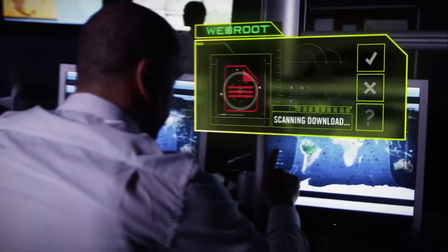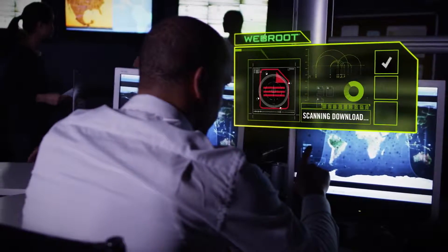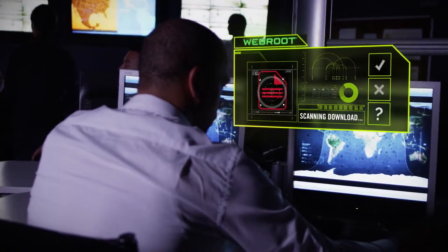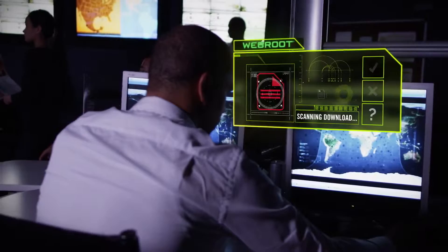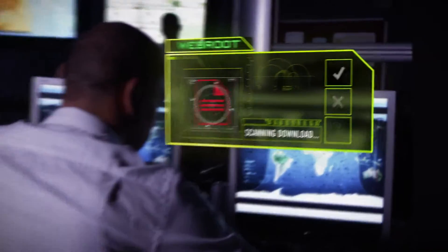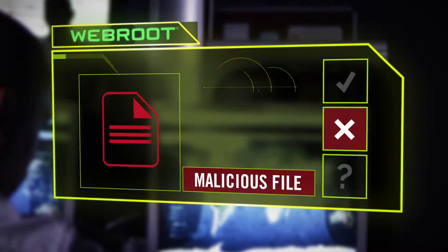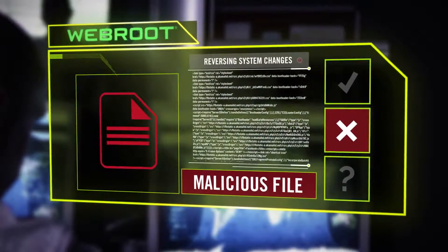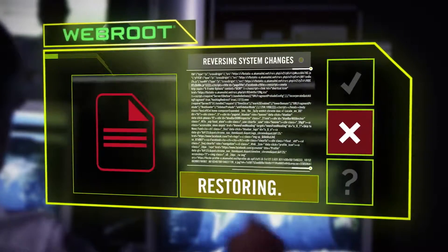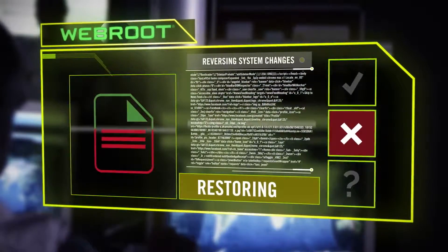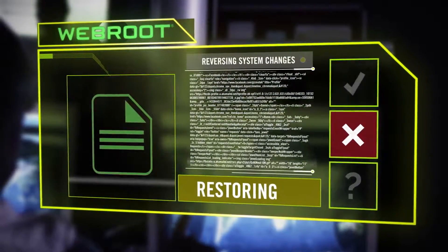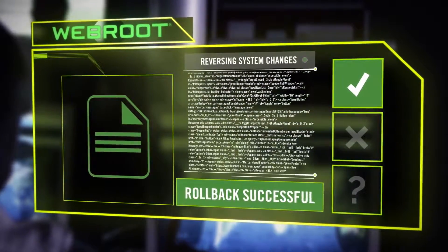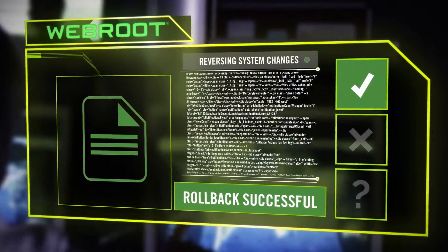SecureAnywhere doesn't stop monitoring an unknown file until it's determined to be good or bad. If a file is found to be malicious, Webroot's unique journaling and rollback features reverse any system changes caused by malware, even stubborn infections such as ransomware.